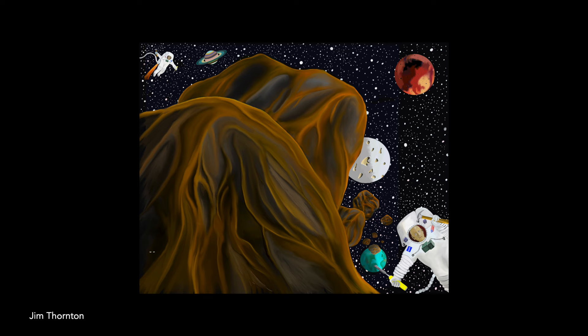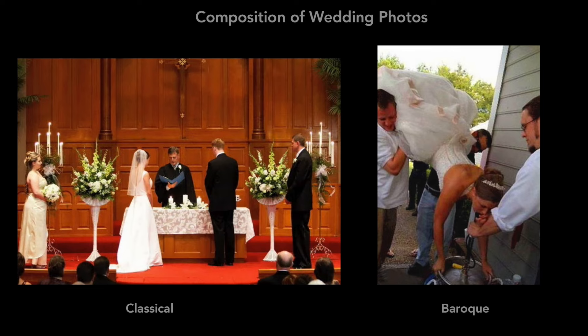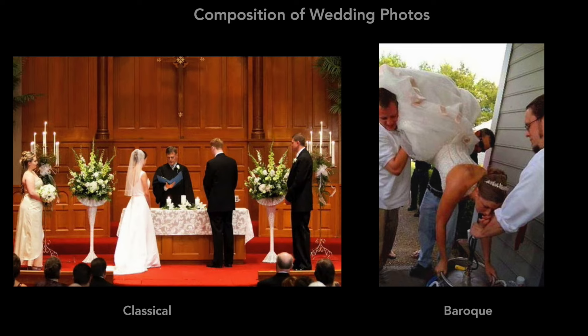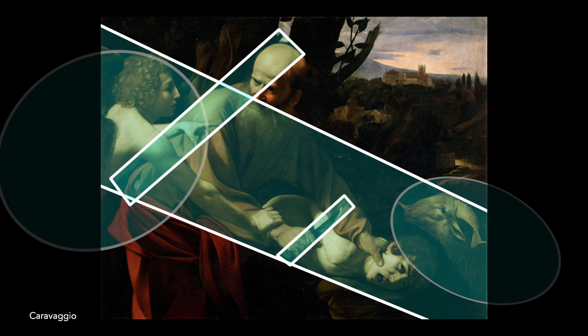Classical designs give a sense of calm, order, and authority. Baroque designs feel dynamic, emphasizing life's vibrancy and flux, and how it can sometimes veer out of control. A pure example of classical design is da Vinci's Last Supper. A pure example of Baroque design is Caravaggio's Sacrifice of Isaac.